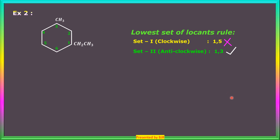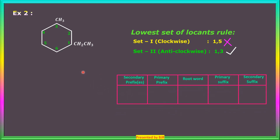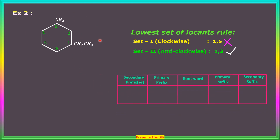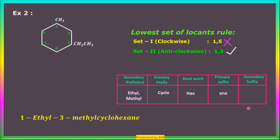In this cycloalkane ring, 6 carbon atoms are there, so the root word is 'hex'. Primary suffix is 'ane'. Primary prefix is 'cyclo'. Two substituents are there — ethyl and methyl. The name of this cycloalkane is 1-ethyl-3-methylcyclohexane.